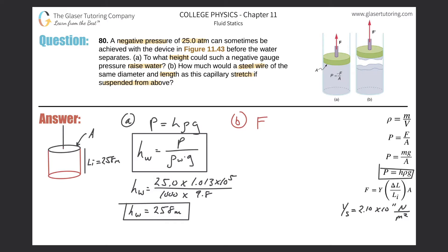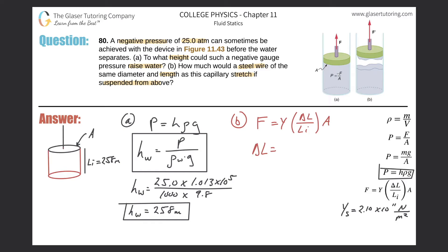The Young's modulus formula is: force applied equals Young's modulus multiplied by the deformation divided by the initial length, all multiplied by the area. We're looking for delta L — how much it stretches — so let's solve for that right away. Rearranging: delta L equals force multiplied by initial length, all divided by Young's modulus multiplied by the area.